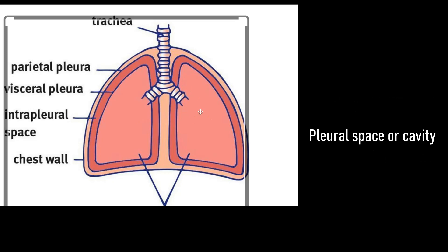If you look at the anatomy of the lung, the lung is covered by two pleural membranes — the outer parietal and the inner visceral. The space between these two pleural membranes is known as the pleural space or pleural cavity, which you can see here in red. This pleural cavity has a small amount of fluid called pleural fluid, which acts as a lubricant when the two membranes glide in opposite directions as we breathe in and out, creating a negative pressure in the pleural cavity that helps the lung expand.